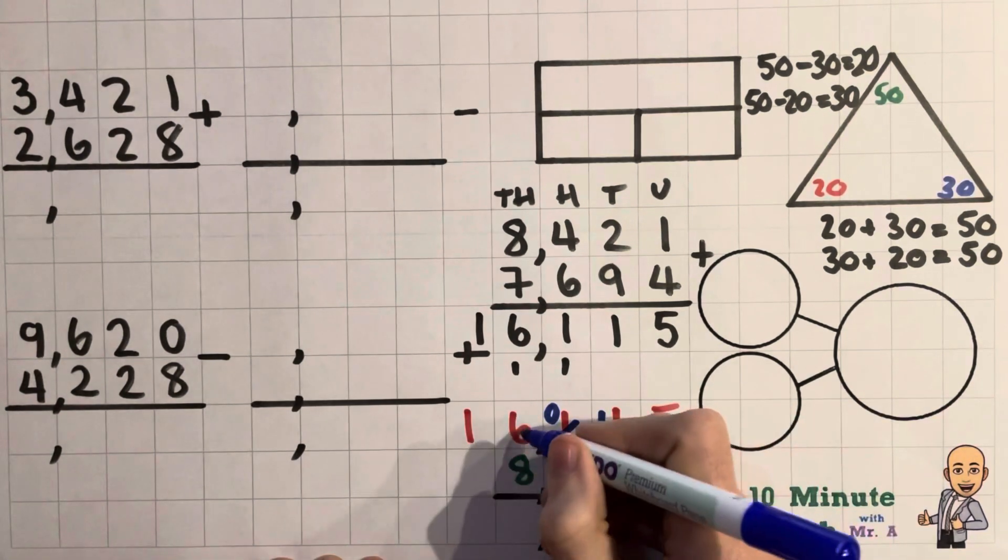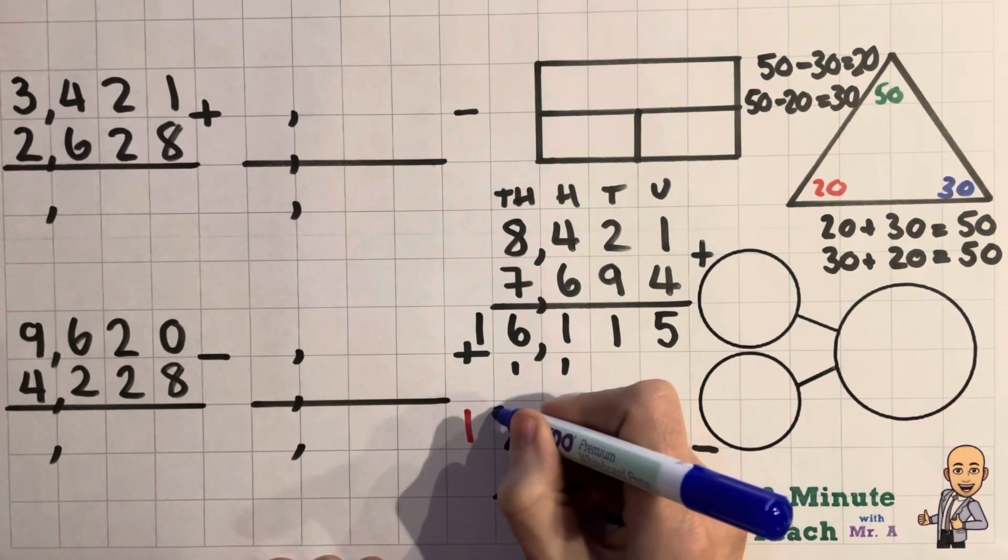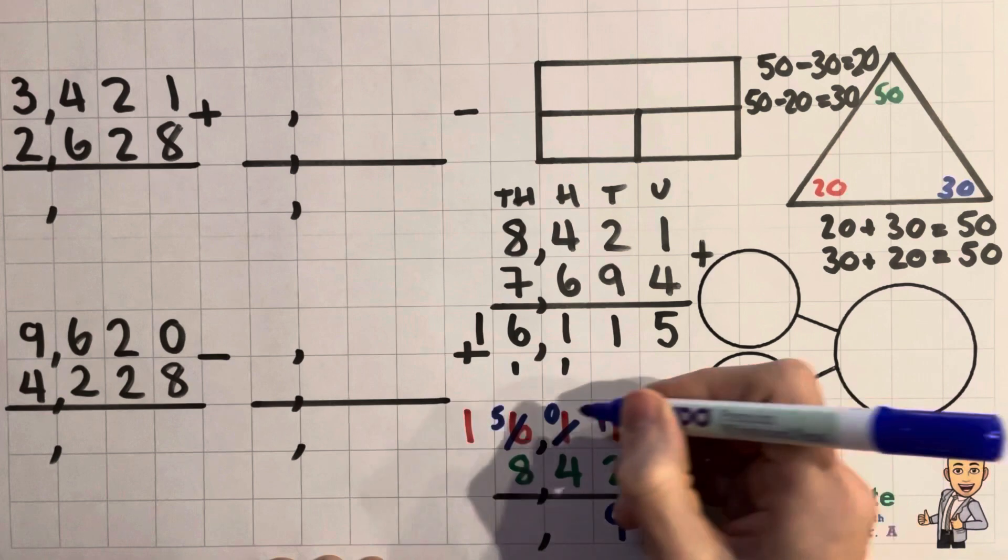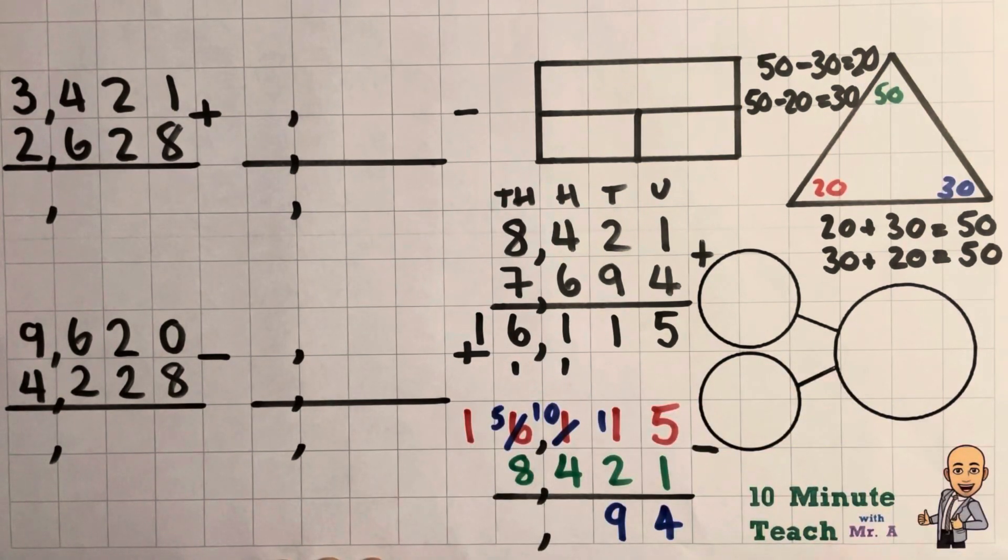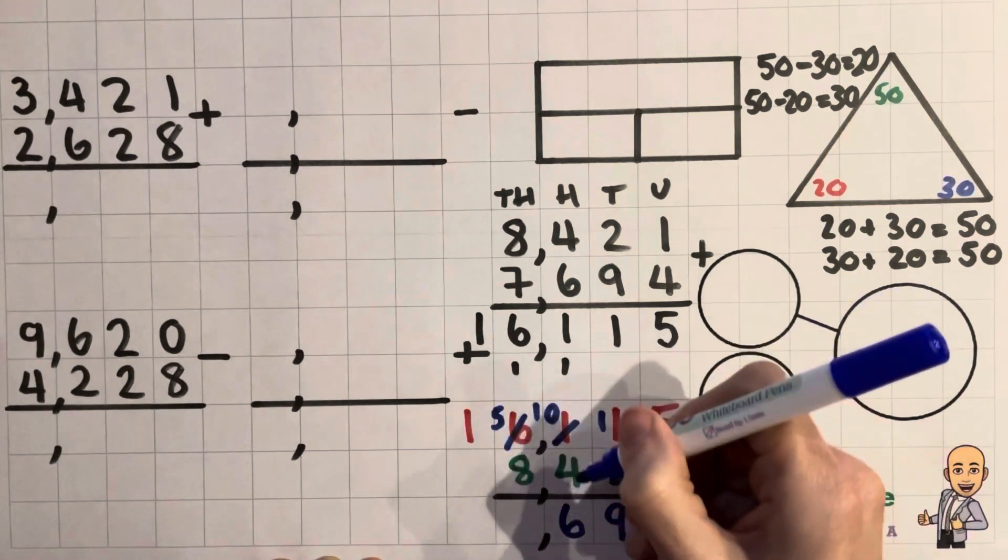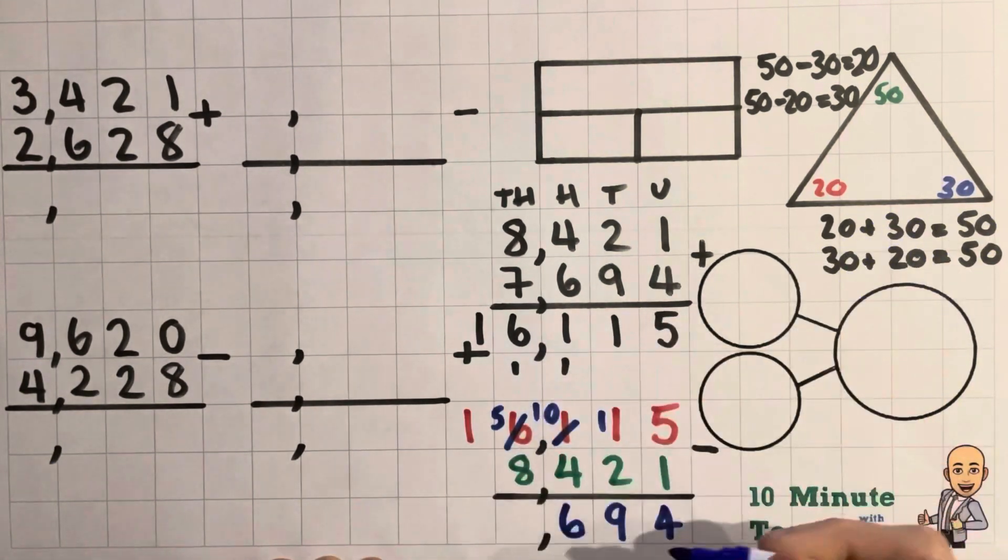No hundreds take 400 I can't do, so I'm going to have to borrow from there. Leaves it with 5,000. And we give that to that one to make it 10,000, and that is 6. So 10 take away 4, or 1,000 take away 400, leaves it 600.